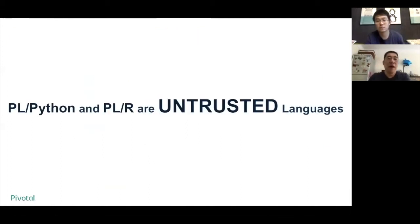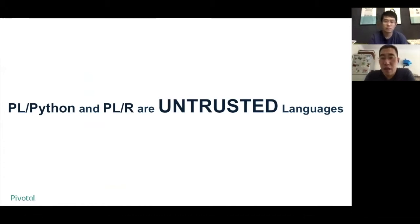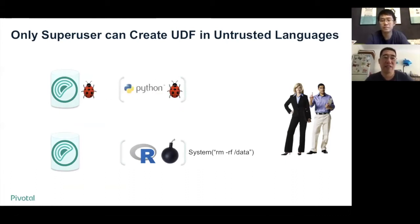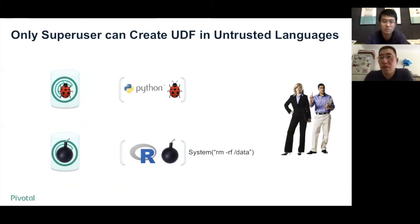But PLPython and PLR are untrusted languages. Untrusted language means it doesn't offer any way to restrict what we can do in the user-defined function. In other words, we can do anything in our code. From a database perspective, untrusted language is not secure. For example, bugs in the user-defined function may affect the database, and malicious code such as deleting the whole directory may destroy the Greenplum database. So, for security purposes, only a super user can create user-defined functions in an untrusted language.